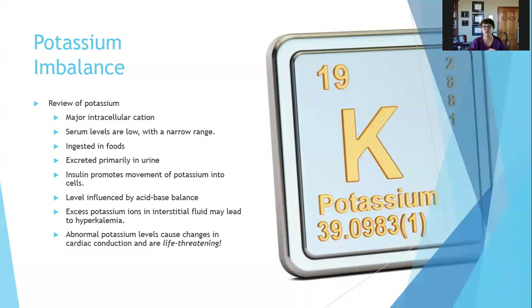Hyperkalemia — hyper too much, kal is potassium (chemical symbol K), emia in the blood — is not good. Abnormal potassium levels can cause changes in cardiac conduction and are life-threatening. Probably the most dangerous electrolyte imbalance is potassium imbalance because it can cause cardiac arrhythmias that can kill you, so potassium imbalance is very serious.